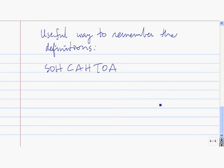Sometimes you might forget the definitions of the trig functions, so here's a useful way to remember them: SOHCAHTOA. Sine is the opposite over the hypotenuse. Cosine is the adjacent over the hypotenuse. And tangent is the opposite over the adjacent. To remember the other three, you just take the reciprocals — sine goes with cosecant, cosine goes with secant, and tangent goes with cotangent.